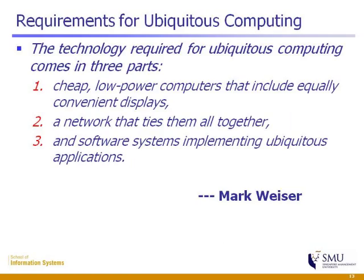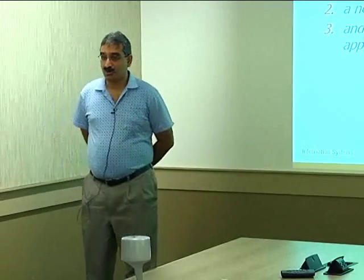That comes down to the requirements for making ubiquitous or pervasive computing work. There are three components that need to be in place. First, you need cheap low-power computers with really good displays and enough inputs like keyboards or touch screens. Next, we need network connectivity — as the internet has shown, nobody wants to be disconnected anymore; you want to talk to friends, pull cloud services, and see what's going on around the world. And finally, we need software that makes it all possible.